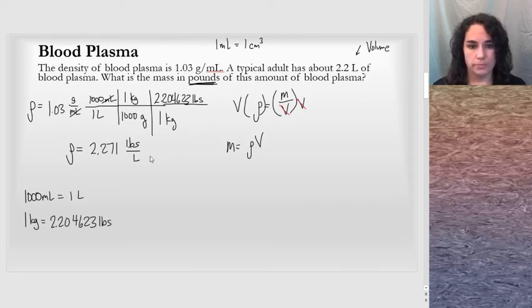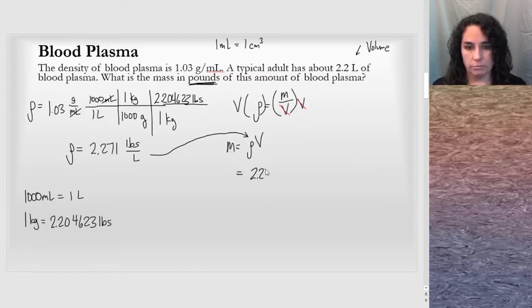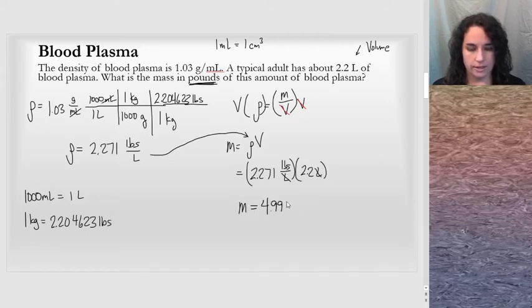So now we're ready to use this value, this quantity over in the equation I have here. I'm trying to find mass. I know rho in pounds per liter. I'm going to multiply by the volume. The volume is 2.2 liters. Note here, our dimensional analysis, the liters will cancel out, and I'm left with pounds. Overall, we will get that the mass is 4.9957 pounds.